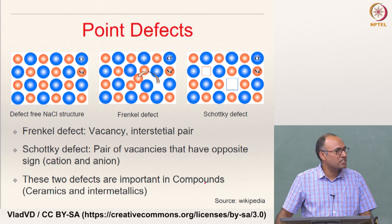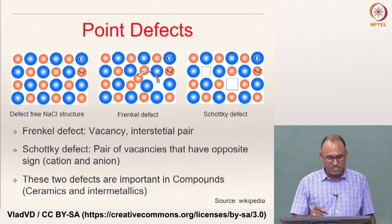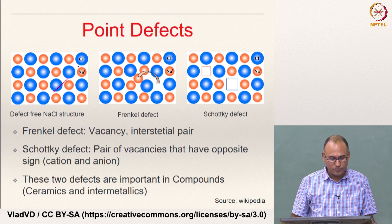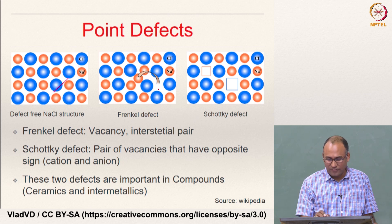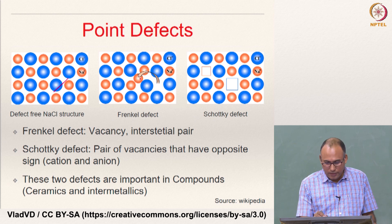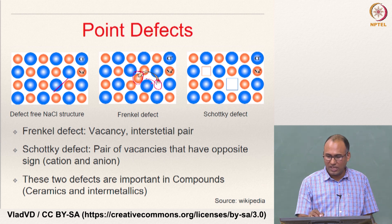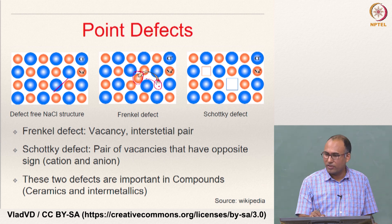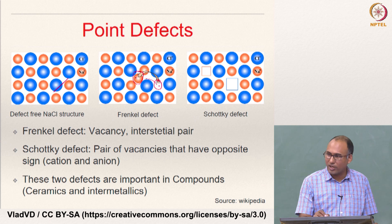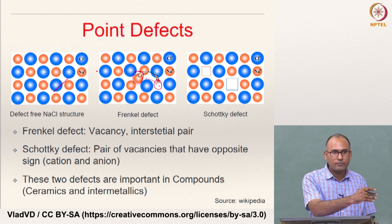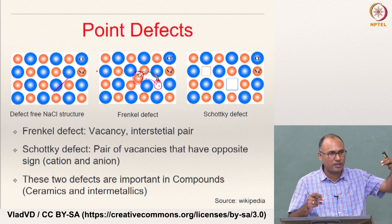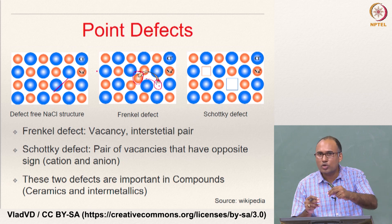This is for instance a NaCl structure. This is the perfect guy defect free and here you have a Frenkel defect. Frenkel defect means an interstitial and a vacancy side by side. If you have a vacancy here and you do not have an interstitial here but from far away then those two cannot be called as Frenkel pair because they should be close to each other.